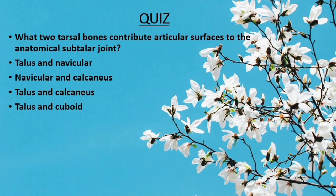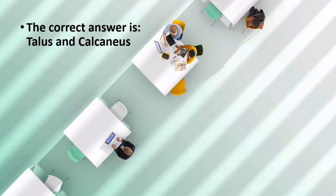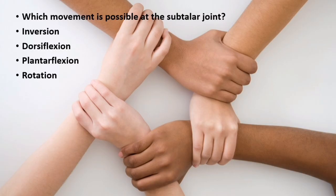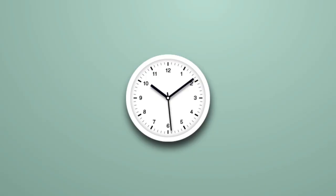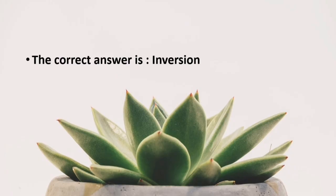Quiz. Question 1: What two tarsal bones contribute articular surfaces to the anatomical subtalar joint? Talus and navicular; navicular and calcaneus; talus and calcaneus; or talus and cuboid? The correct answer is talus and calcaneus. Question 2: Which movement is possible at the subtalar joint? Inversion, dorsiflexion, plantarflexion, or rotation? The correct answer is inversion.